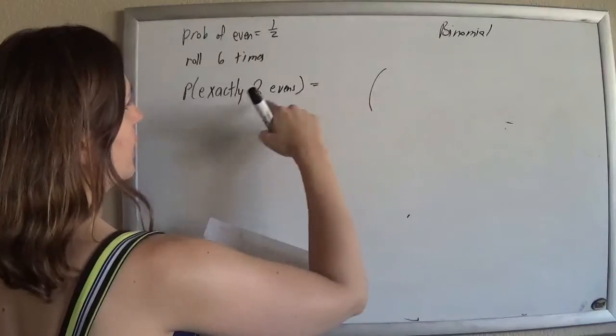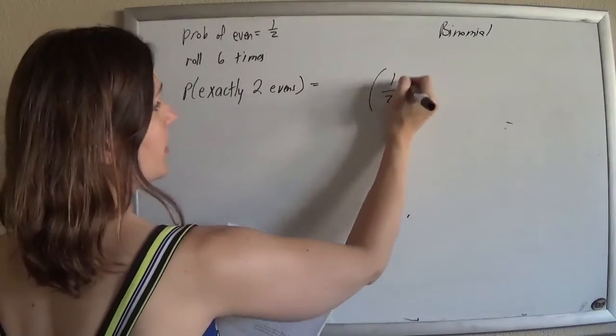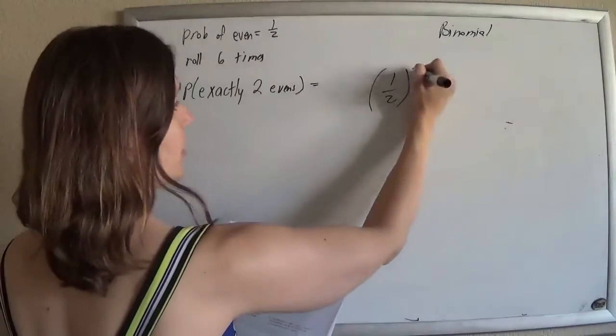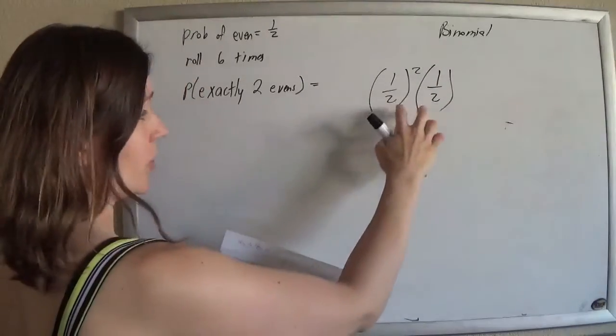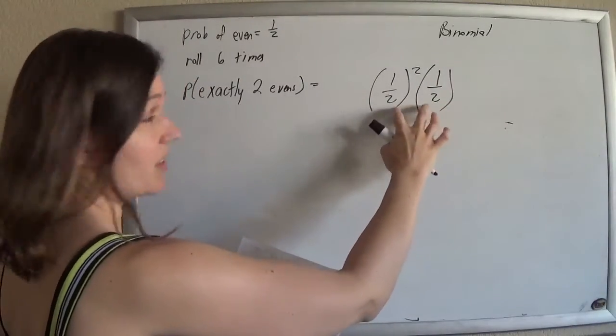So, I want two evens, so the probability of getting even is a half. I want two of those, and the probability of not getting even is also a half. It's always going to be one minus this; it's a coincidence that they match.